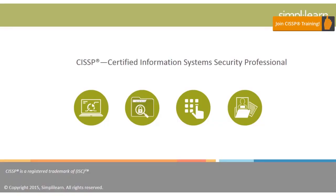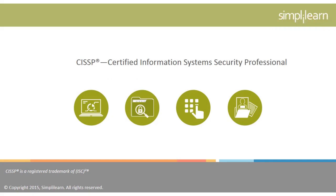Hello and welcome to the CISSP certification course. Certified Information Systems Security Professional, CISSP, is an autonomous information security certification governed by the International Information Systems Security Certification Consortium, or ISC². A CISSP is an information assurance professional who defines the architecture, design, management, and controls that assure the security of business environments.